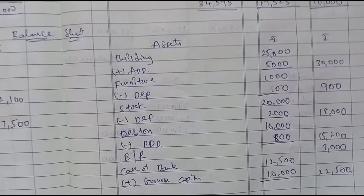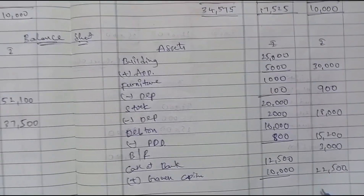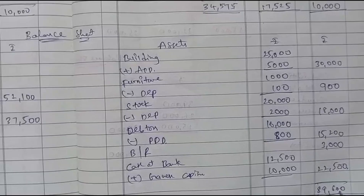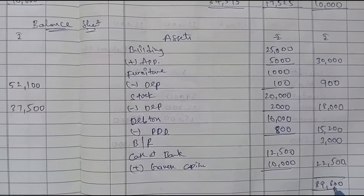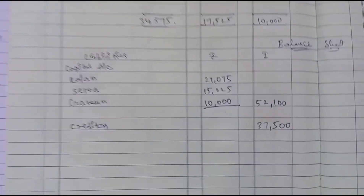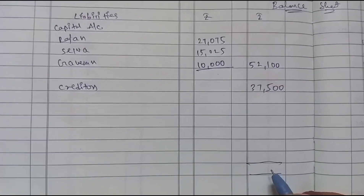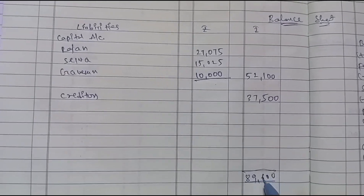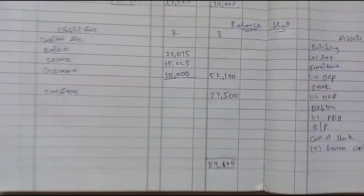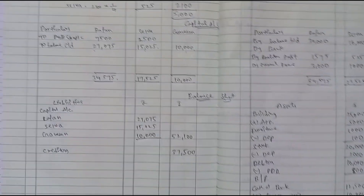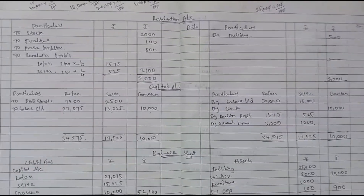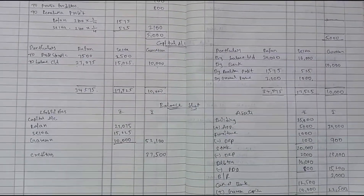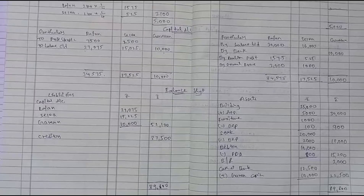All items are listed and the total of the balance sheet comes to 89,600 on both sides. This is an important 5-mark question covering revaluation account, capital account, and balance sheet. Thank you friends.